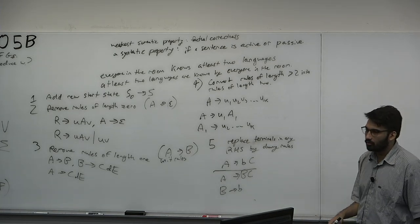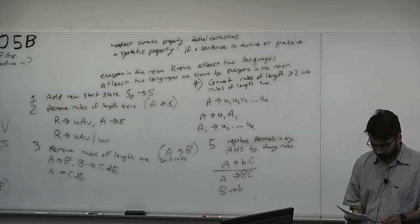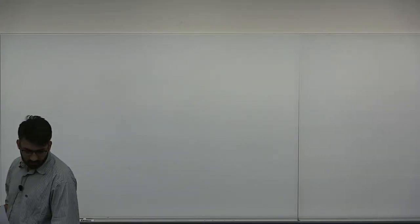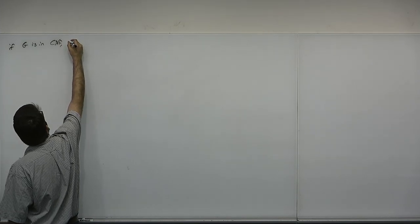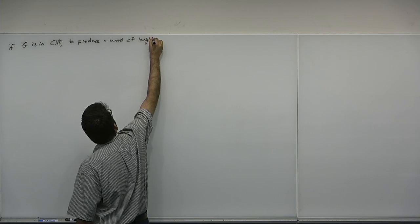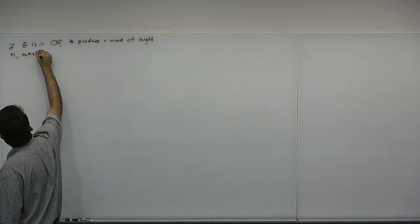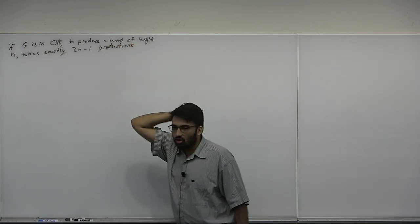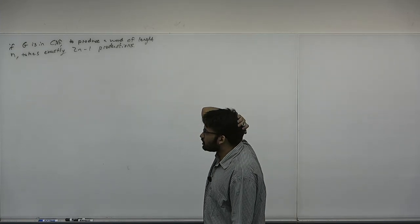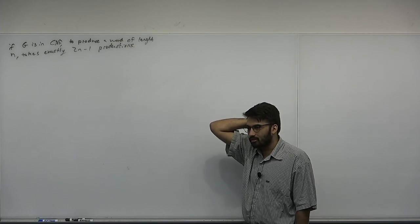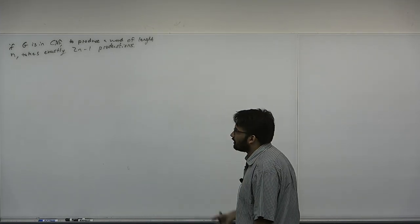So what's the point of CNF? If a grammar G is in CNF, to produce a word of length N takes exactly 2N minus one productions. This solves the acceptance problem for CFGs: convert the grammar to CNF, enumerate all productions of length 2N minus one. If your word is in that list of productions, it accepts it; if it's not, it doesn't. N has to be greater than or equal to one — the empty string would require minus one productions, which doesn't work, so that's an outlier case.